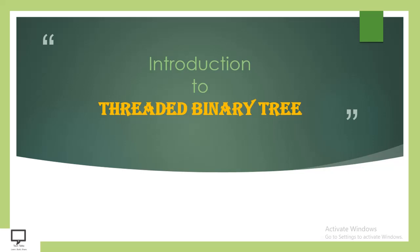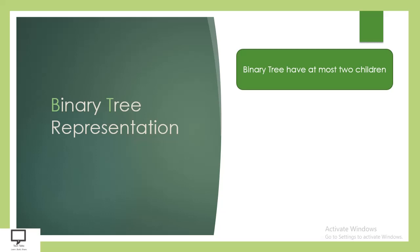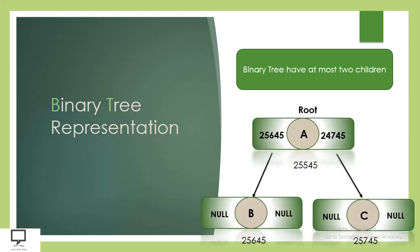Before moving to the threaded binary tree, let's think about what a binary tree is. A binary tree, as the name itself suggests, has at most two children or two child nodes. Whenever we represent a binary tree, a node has a left child and a right child. When both the left and right pointers of any node are null, it indicates that they are leaf nodes. Here you can see that four null values are represented.